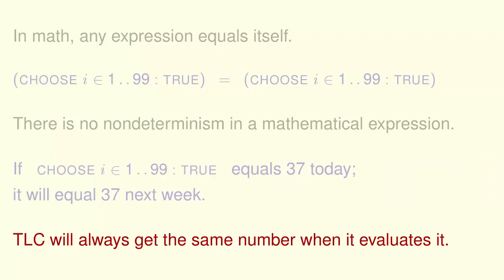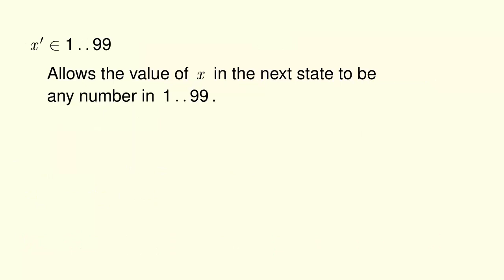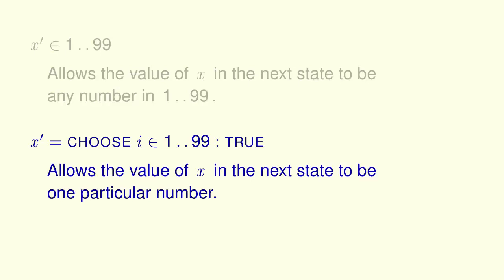You shouldn't care what number. The formula X prime in the set 1 dot dot 99 allows the value of X in the next state to be any of the 99 numbers from 1 to 99. The formula X prime equals this choose expression allows the value of X in the next state to be some particular number between 1 and 99, perhaps 37. There's no reason why you'd ever want to write something like this.